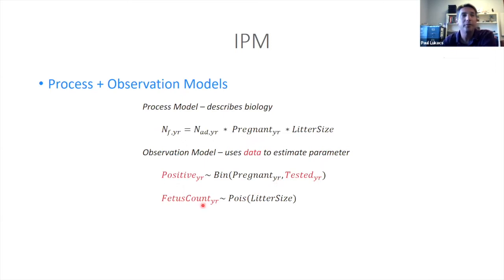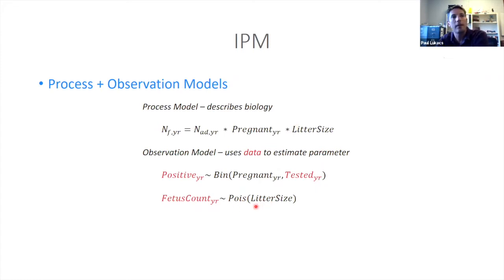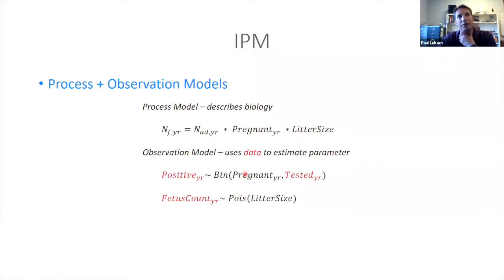Then we might have another piece of data — a fetus count. Litter size is a count, a small number, and that can be nicely modeled as a Poisson, where our observations follow a Poisson with mean litter size. That links right back to our process model. So now we have two observation models linking back to our process model describing the biology for the birth rate.